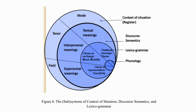The SFL model proposes that human language has evolved to make three generalized kinds of meanings: experiential meanings, interpersonal meanings, and textual meanings. In addition, it provides an innovative value, form, functionalism, and serves as a useful tool for those who want to analyze text.